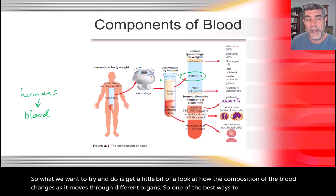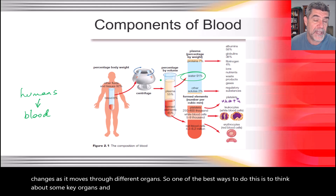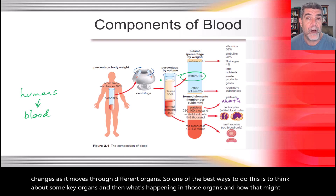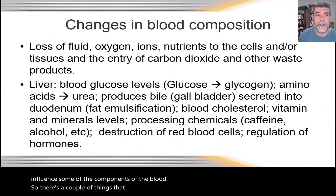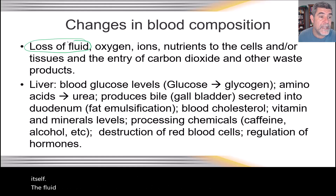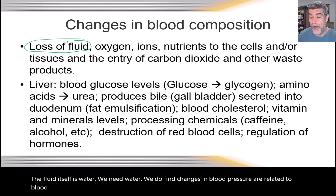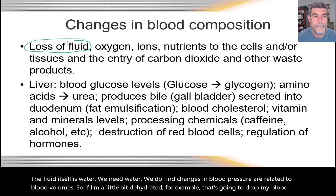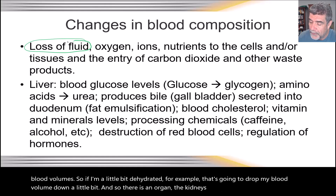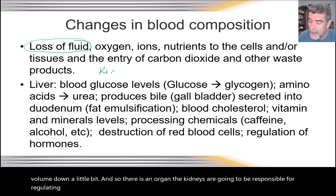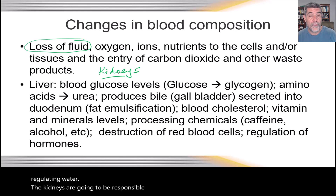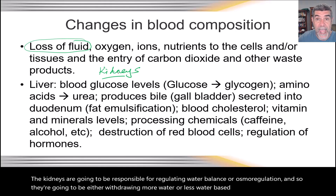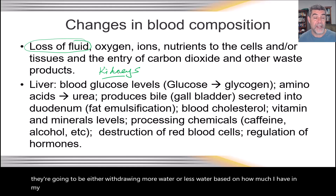One of the best ways to do this is to think about some key organs and what's happening in those organs and how that might influence blood components. The fluid itself is water, and we find changes in blood pressure related to blood volume — if dehydrated, blood volume drops. The kidneys are responsible for regulating water balance, or osmoregulation, and they will either withdraw more or less water based on how much is in the blood at a given time, under hormonal control.